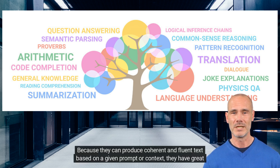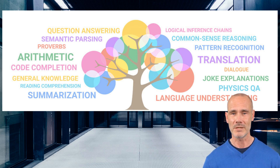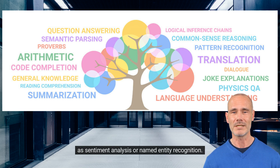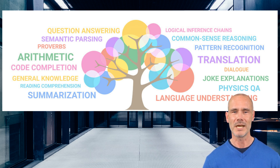Because they can produce coherent and fluent text based on a given prompt or context, they have great potential for generating interesting and engaging content. Another potential application is using these models to improve natural language processing tasks such as sentiment analysis or named entity recognition. By incorporating large language models into these systems, we may be able to improve their accuracy and performance.